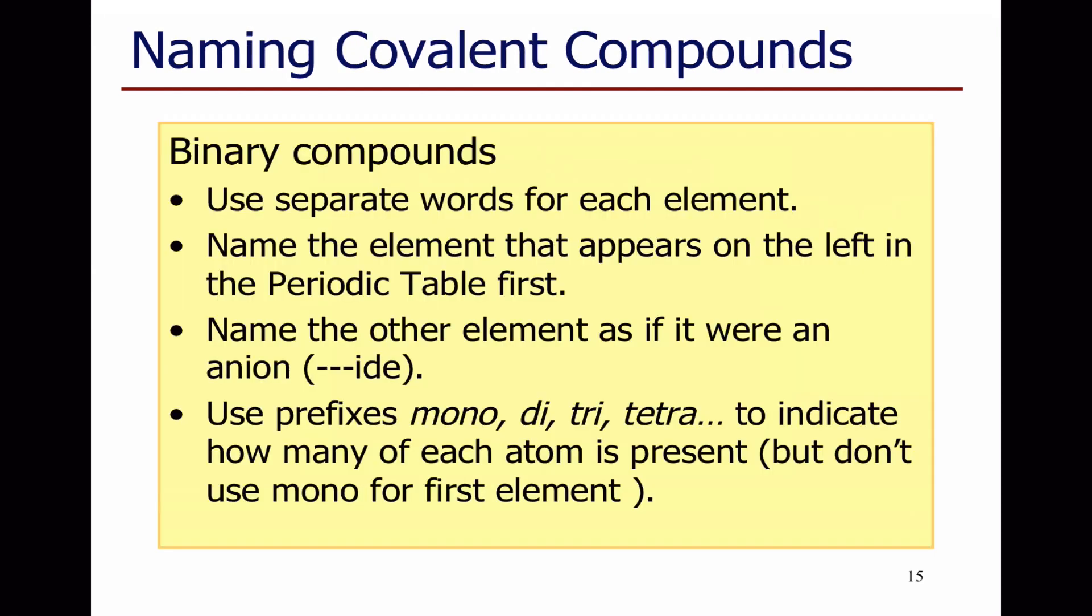Covalent compounds are named in quite a similar way. We again use separate words for each element. This time, the element that appears first is the one that's on the left in the periodic table. And the other element is named as if it were an anion by adding "-ide" to its stem. The difference is that we now add a prefix to the atom name to tell us how many there are present. We use mono for one, di for two, tri for three, tetra for four, etc. For the first element in the name, we only use di, tri, or tetra. We don't use mono. But for the second, we always add mono, di, tri, or tetra as appropriate.